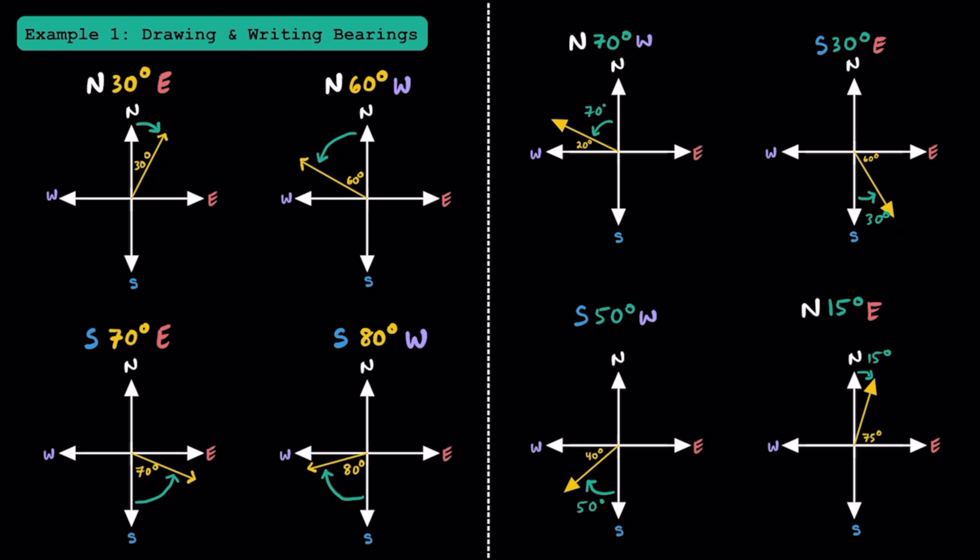When dealing with bearings, remember that north or up always represents zero degrees. Always write your angle measure relative to the vertical axis or the north-south line, then write your east or west direction last. Having a good understanding of these concepts is really important to help you be successful with the application problems we're about to try.